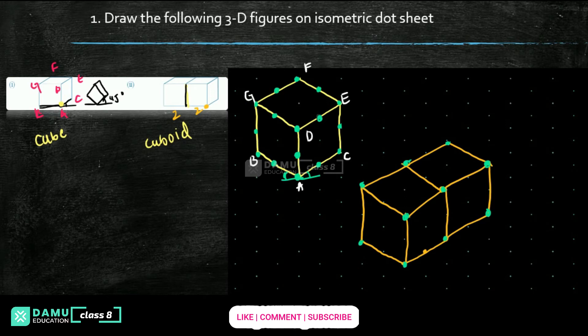I am turning this side. From here A, B, C, D. I took like A, B, C, D. Like that we can draw. Or otherwise with only 1 cm you can take, or you can draw like this also.